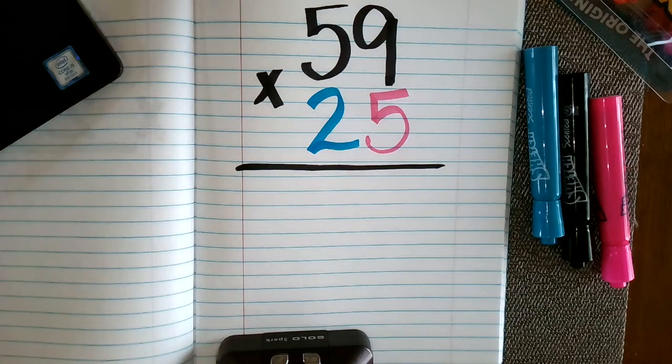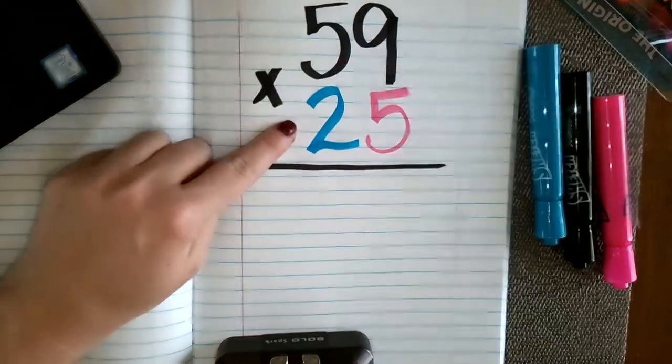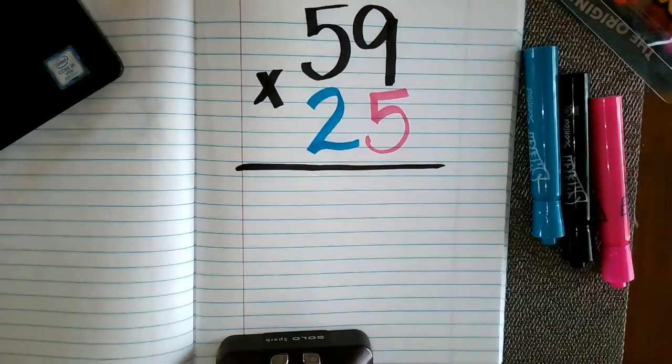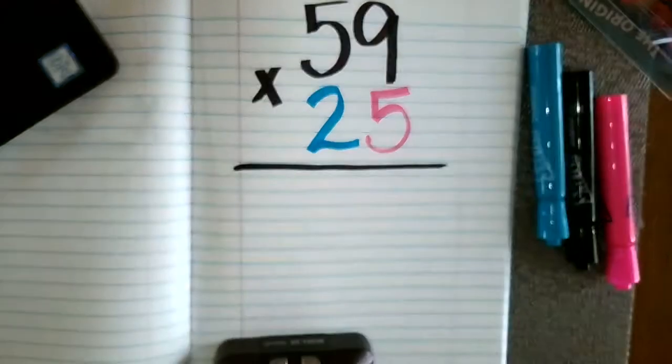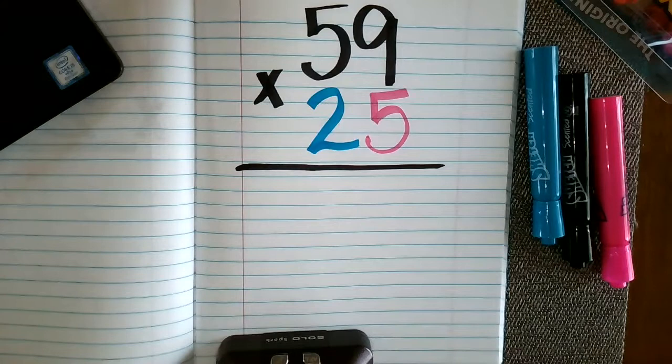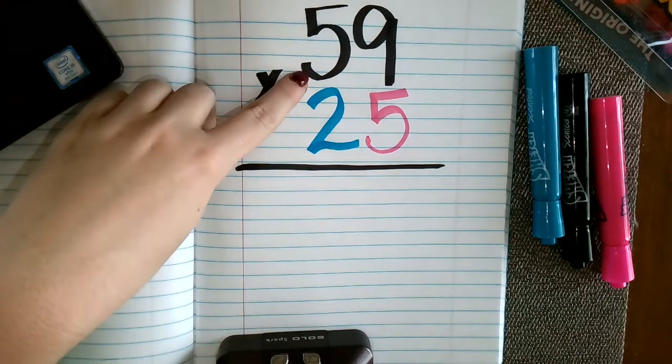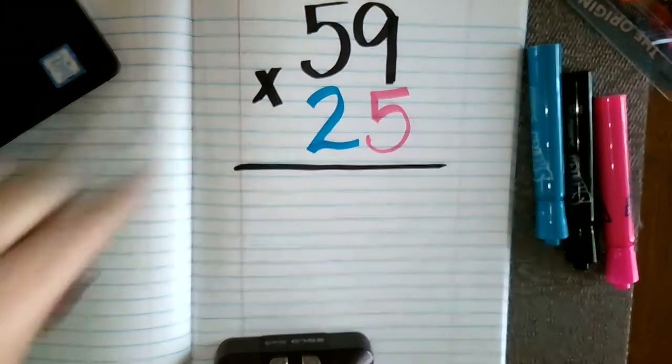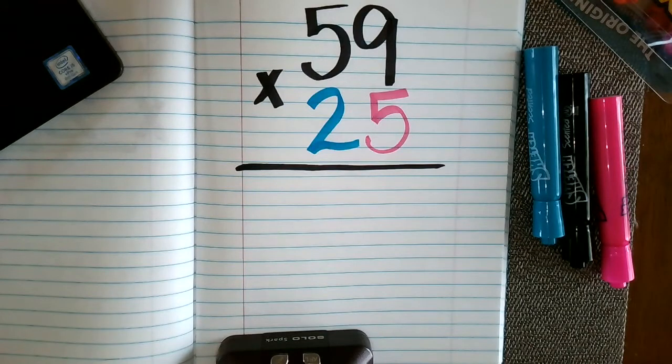Hi guys! So this is practice number one for how to do the standard algorithm method when you're multiplying numbers. We're going to start with a two-digit by two-digit number. You can tell that it says 25 times 59, but I wrote it as 59 times 25. You want to make sure that on your piece of paper you always write the larger number on top. So 59 is larger than 25, which is why I wrote 59 first.